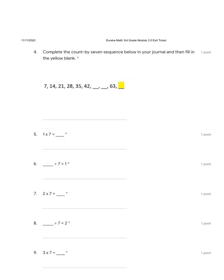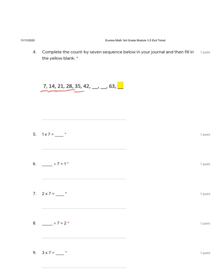Our next problem, we are filling in the last blank. Again, we're counting by sevens: seven, fourteen, twenty-one, twenty-eight, thirty-five, forty-two, forty-nine, fifty-six. If you're not sure what comes next, you add fifty-six plus seven gives you sixty-three. Now sixty-three plus seven equals seventy.